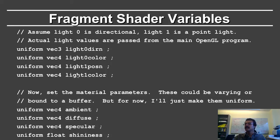Let's talk about the shader variables. Here we're assuming that light 0 is directional and light 1 is a point light. Of course, your program needs to handle more general cases in homework 2. The actual light values are passed from the main OpenGL program. So you have light 0 direction, because light 0 is a directional light, it's a vec3. Note that these are characteristics of the GLSL shading language — I'm showing you actual GLSL code.